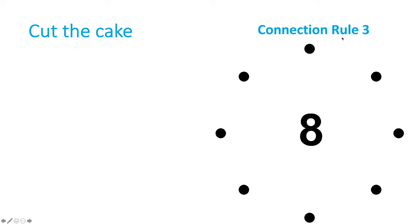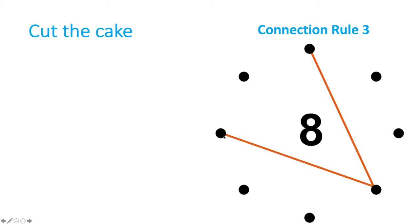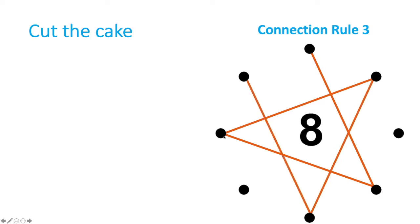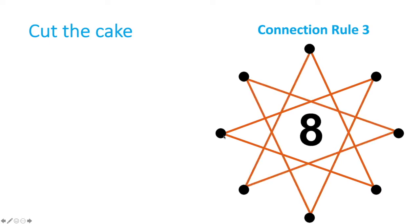This is called a connection rule of three. I pass it, and then the next person passes it to the third person going around clockwise in the circle. We keep going — three more, three more — and we finish when the ball gets back to the person who started the sequence.